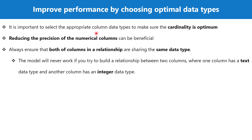It is important to select the appropriate column data types to ensure that cardinality is optimum. We looked at examples related to text, numeric, and datetime data types. If you have a numeric data type, you can further improve performance by reducing the precision of numerical columns — you need to be sure how many decimal places you actually need. Reducing precision further optimizes the performance of the value encoding algorithm.